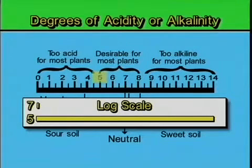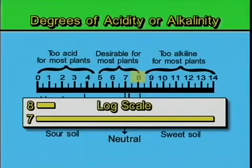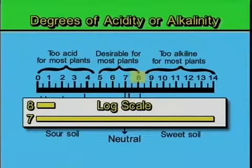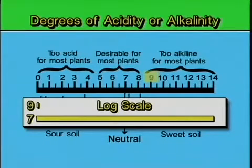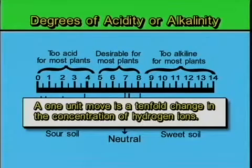Reversing that discussion and moving up the scale: a soil with a pH of 8 has 10 times fewer hydrogen ions than one with a pH of 7. Correspondingly, a soil with a pH of 9 would be 100 times less in hydrogen than one with a pH of 7. So a log scale implies that a one-unit move is a 10-fold change in concentration of what we are measuring — which is the concentration of hydrogen ions.